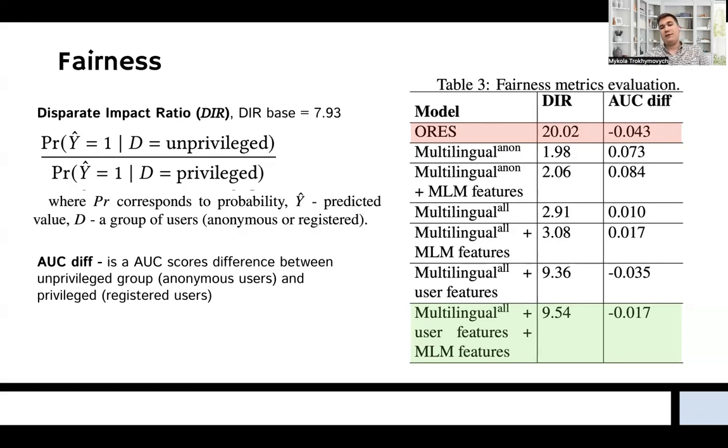However, as from the table we can see, the same disparate impact ratio for the ORES model is 20.02, which is much higher than the base rate, meaning the model introduces significant bias against anonymous users. Our best configuration shows a much closer value, which is 9.54.